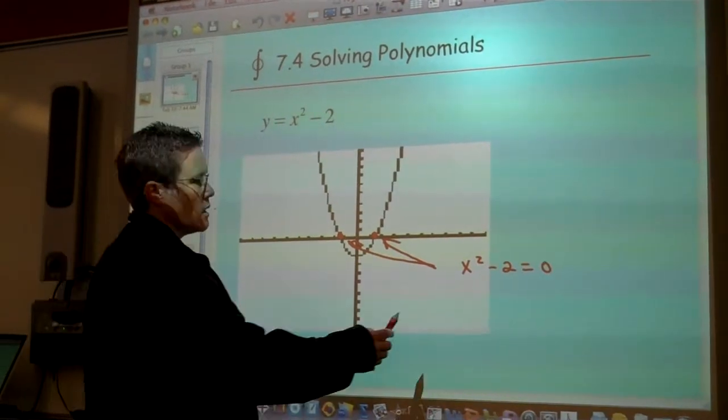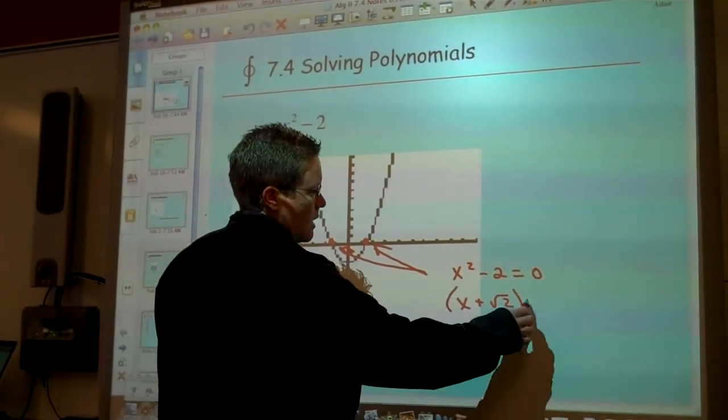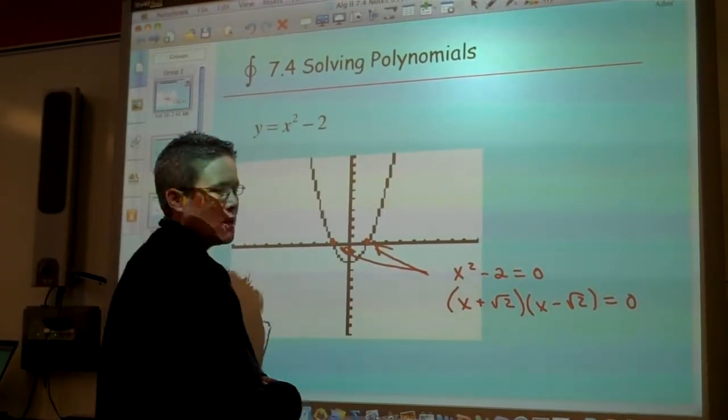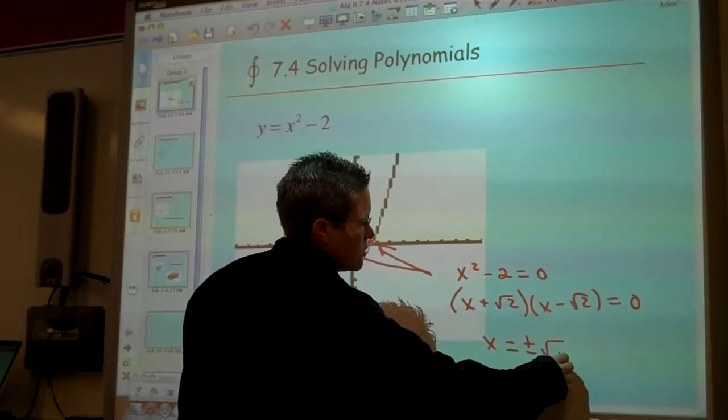So in this particular function we'll take a peek at x plus root 2, x minus root 2 in factored form equals 0, and by the zero product property we'll take a peek at x equals plus or minus root 2.